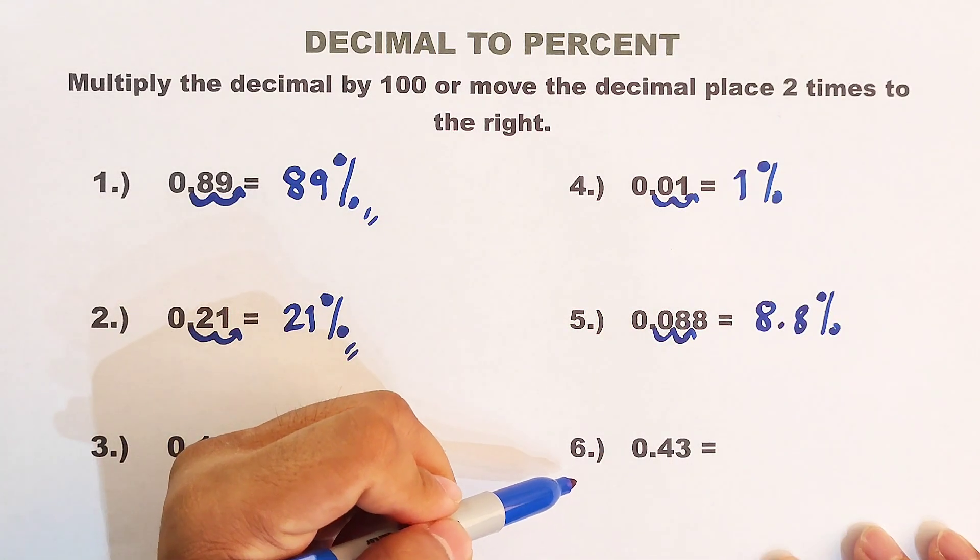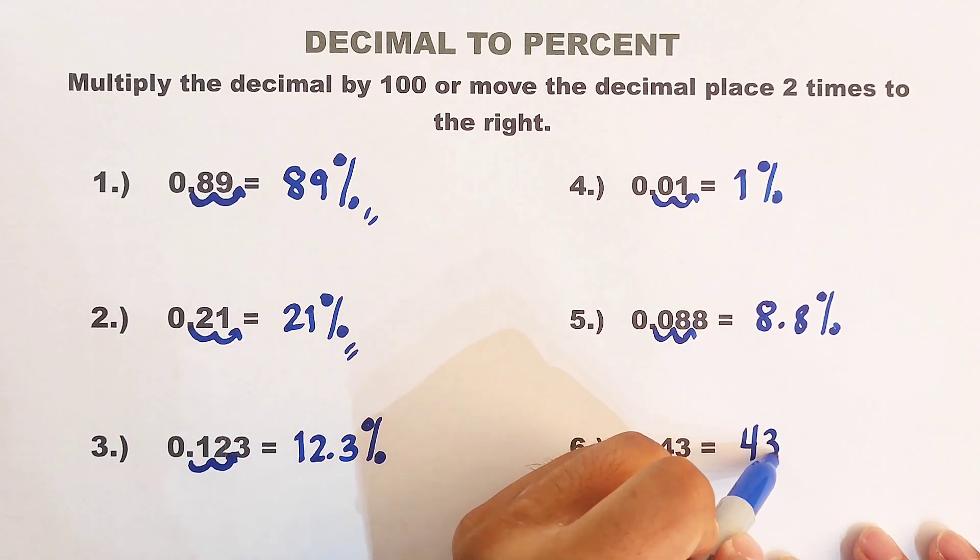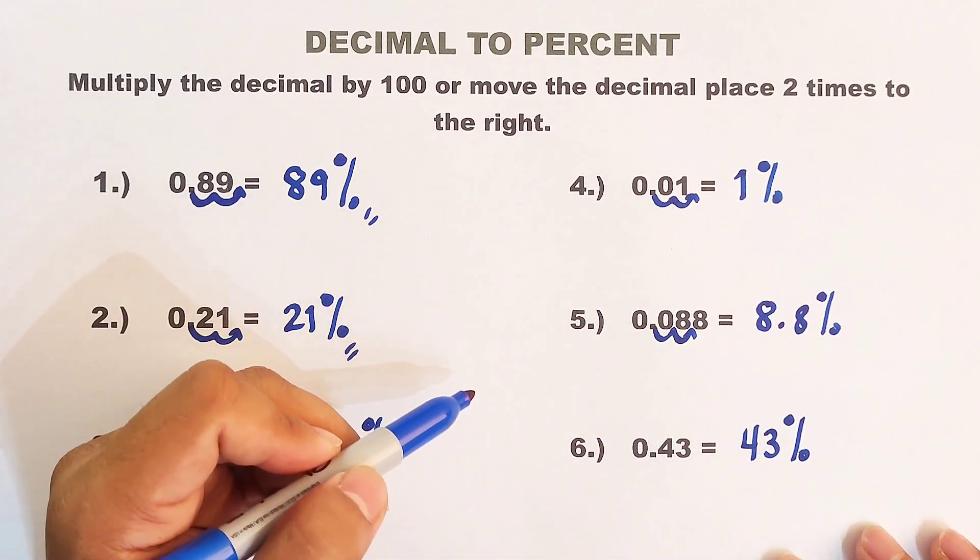Now let's move on with the last example, 0.43. And as simple as that, the correct answer is 43%.